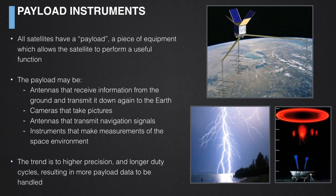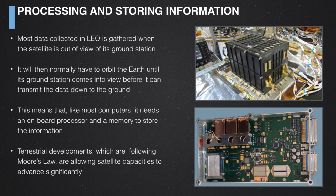You put up a satellite for a reason — it has a payload collecting data of some form, with a variety of different types listed here. In general, a lot of spacecraft in low Earth orbit collect and store data. The illustrations on this slide show a satellite used to investigate upward-shooting forms of lightning that happen above thunderclouds. There are many different applications for remote sensing from low Earth orbit, and the trend is toward increasing precision and longer duty cycles, producing progressively larger data files to be processed and stored.